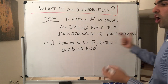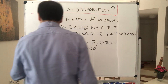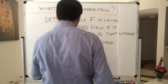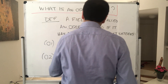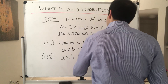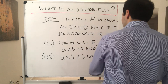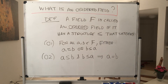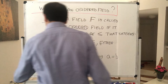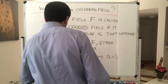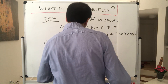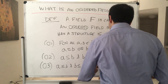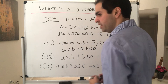That's called trichotomy. Moreover, suppose both cases hold: A is less than or equal to B and B is less than or equal to A — that gives you A equals B. And then there's transitivity, just like for equality: A ≤ B and B ≤ C implies A ≤ C.